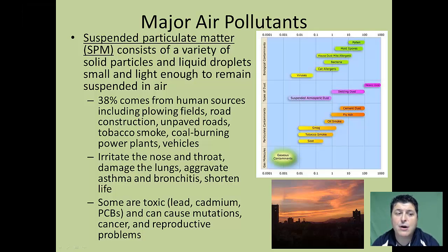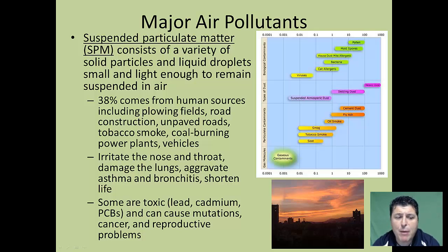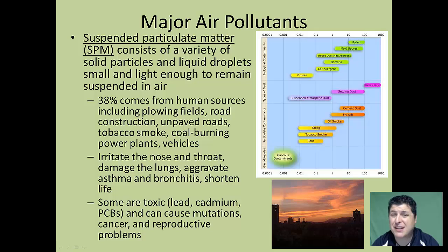Another major class of air pollutants, and probably the most immediately dangerous to health, is suspended particulate matter — a variety of solid particles and liquid droplets small and light enough to remain suspended in the air. About 38% come from human sources like plowing fields, road construction, tobacco smoke, coal-burning power plants, and vehicles. These small particles can irritate the nose and throat, damage the lungs, aggravate asthma and bronchitis, and lead to shortened life through chronic obstructive pulmonary disease. Some suspended particles are actually toxic, like lead and cadmium, which can cause mutations in cells, leading to cancer and reproductive problems.